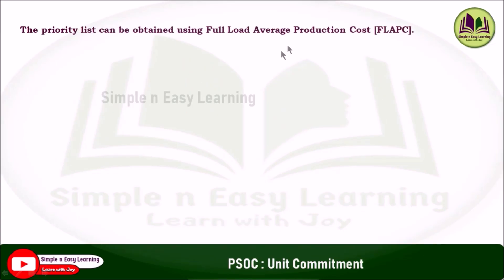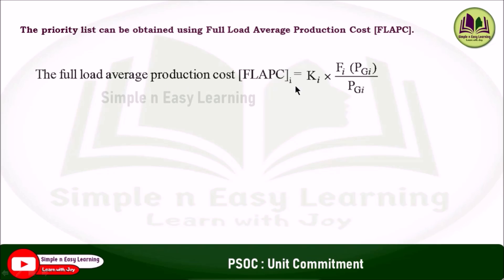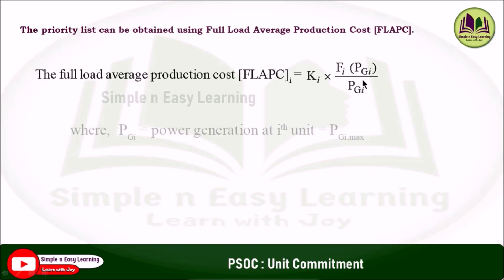The priority list can be obtained using full load average production cost. The formula FLAPC_i is equal to K_i multiplied by F_i(PG_i) divided by PG_i, where K_i is the fuel cost and F_i(PG_i) is the fuel cost function evaluated at PG_i max — the maximum power generation of the i-th unit. From the generation limits, select the maximum value to substitute into the fuel cost function in the numerator, and substitute PG_i max in the denominator.